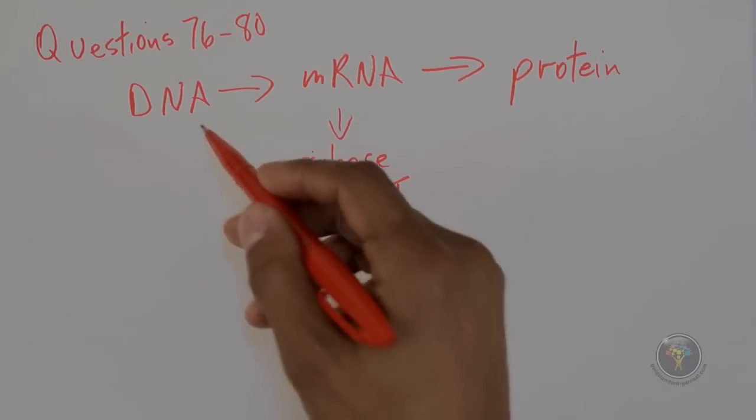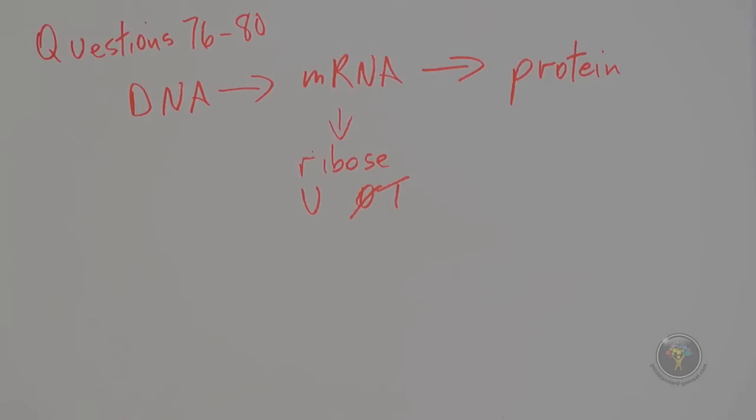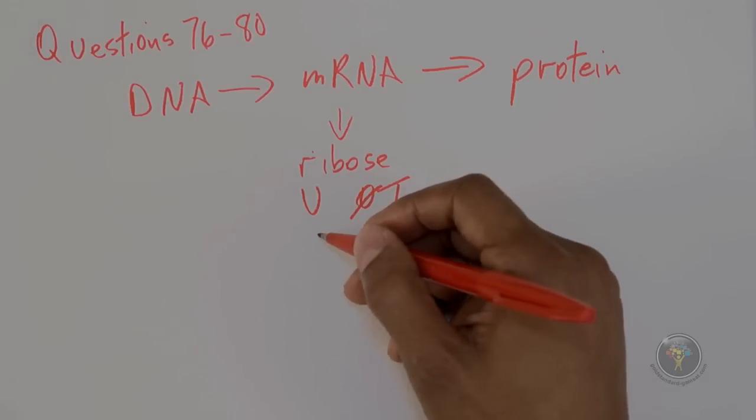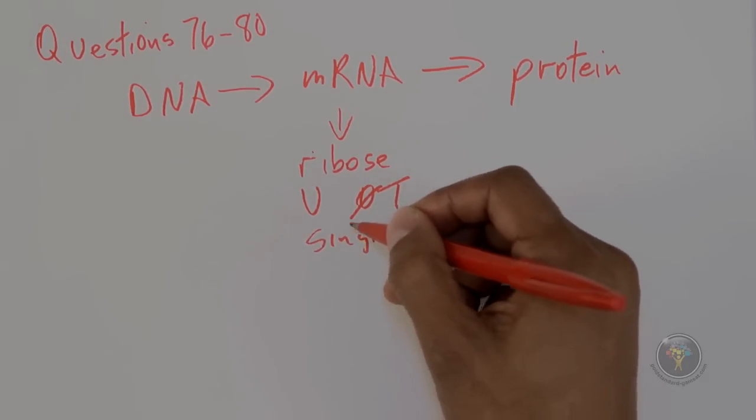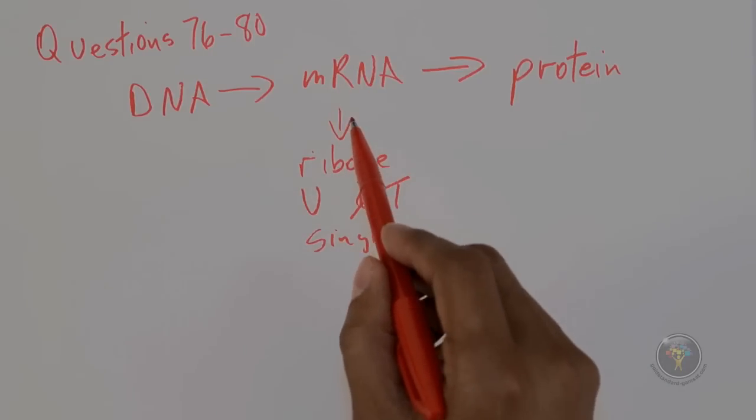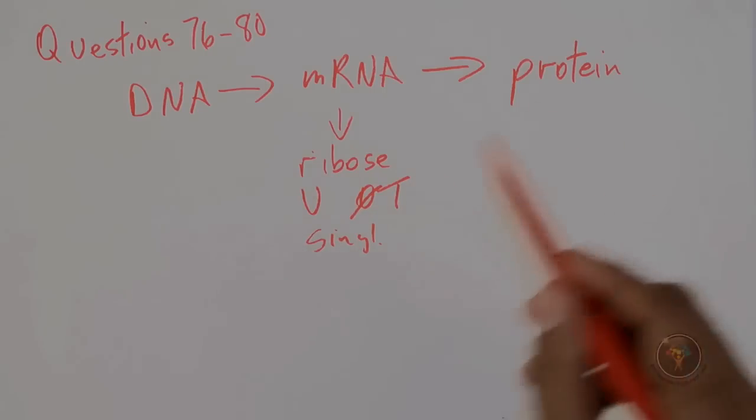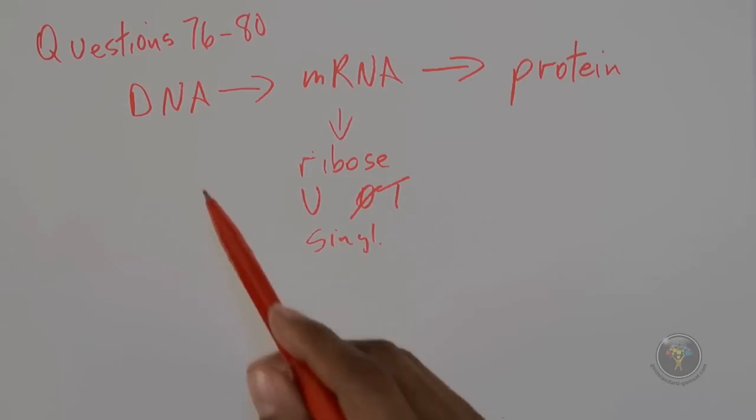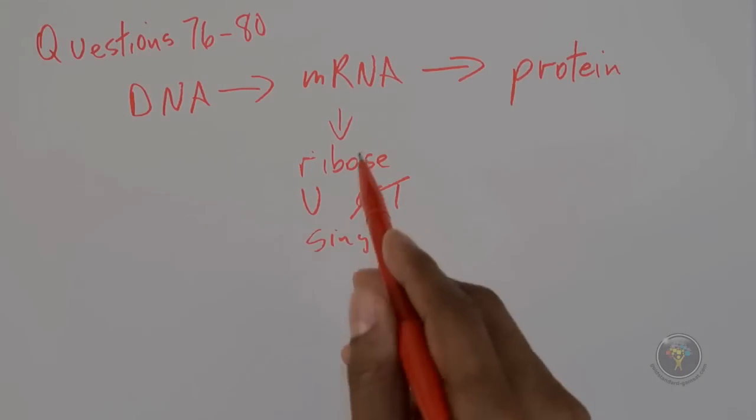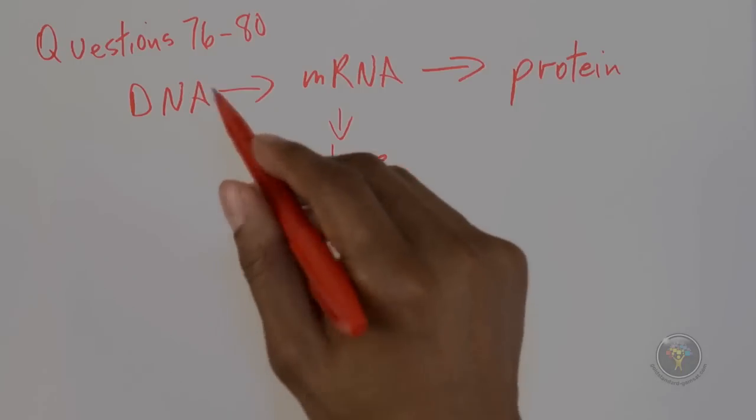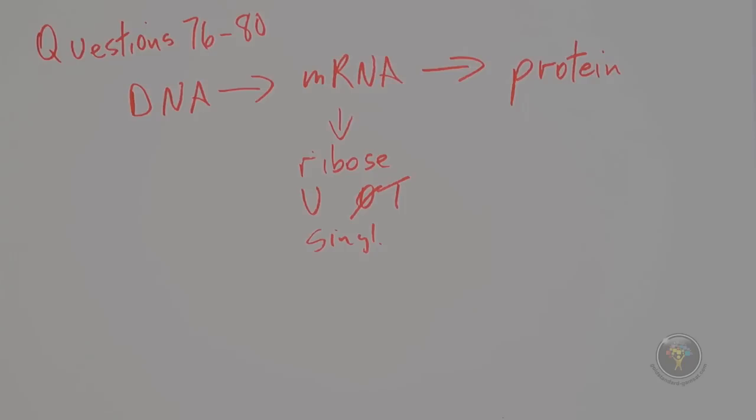The other thing is that messenger RNA is not a double-stranded helix as DNA is. It is a single-stranded molecule. So there are different reasons why this is a transcript of the DNA molecule. It is not the DNA itself coming out of the nucleus. DNA is royalty. It sits on the throne in the nucleus and it sends out a messenger. And so the messenger is, of course, going to the rough endoplasmic reticulum, which is organelle X, and organelle Y is certainly the nucleus. So the answer for 77 is D.